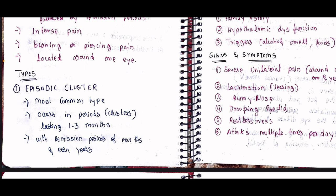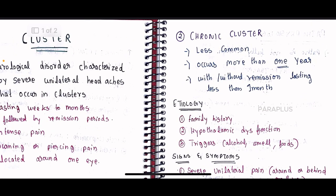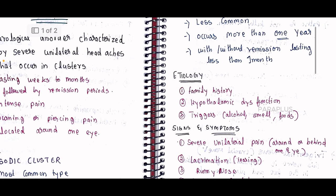The remission or resting phase can last less than one month in chronic cases. One side is affected, lasting with remission less than one month. Risk factors include family history, hypothalamic dysfunction, and triggers such as alcohol, strong smells, and certain foods.